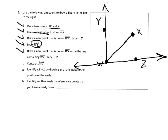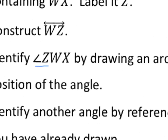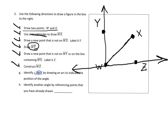Now step G says identify the angle ZWX. The angle ZWX means we have an angle that goes through these points, and the corner of the angle — the vertex — is W, the middle letter. We use the letters Z, W, and X. Here's Z, here's W, here's X, so the angle is right here, and we draw the arc to indicate angle ZWX.